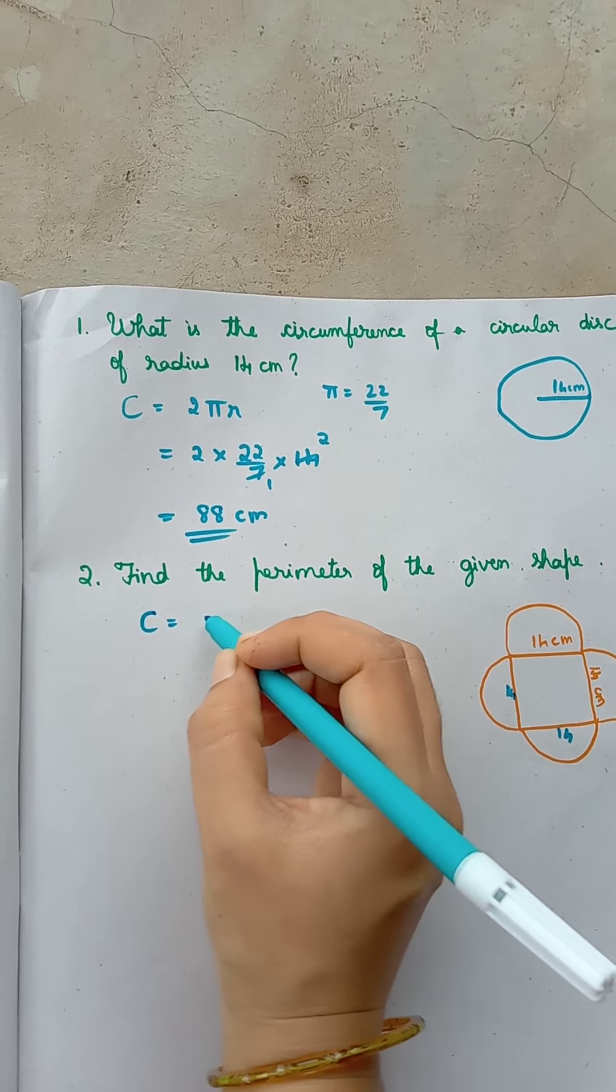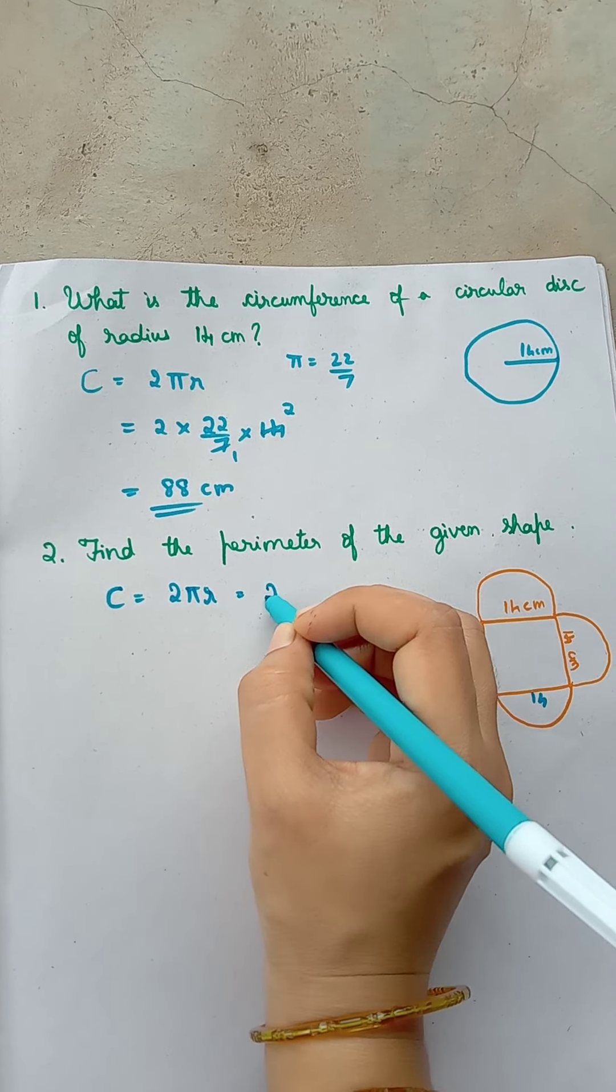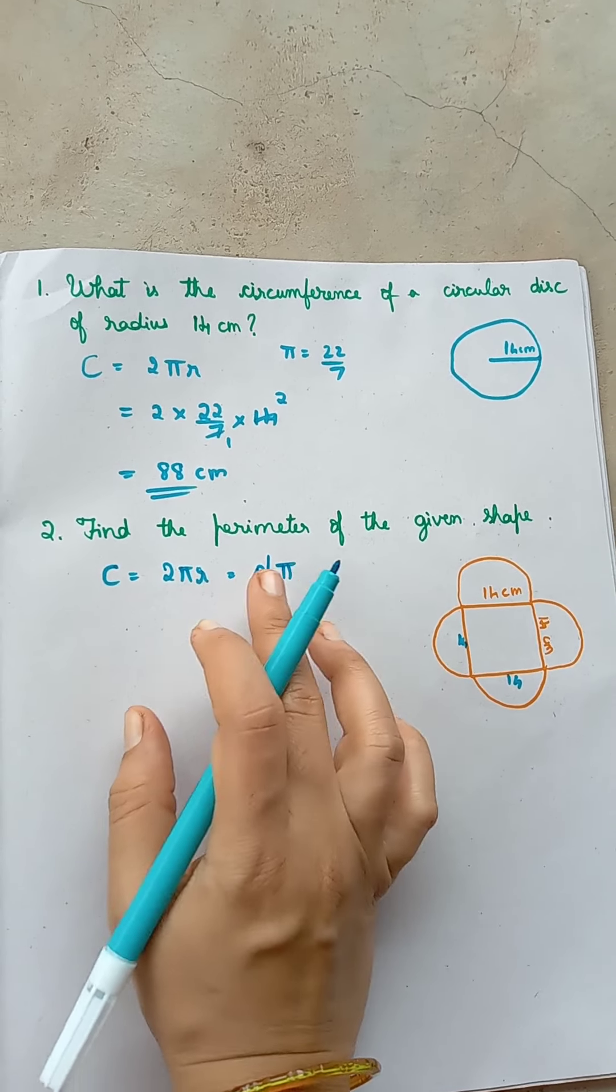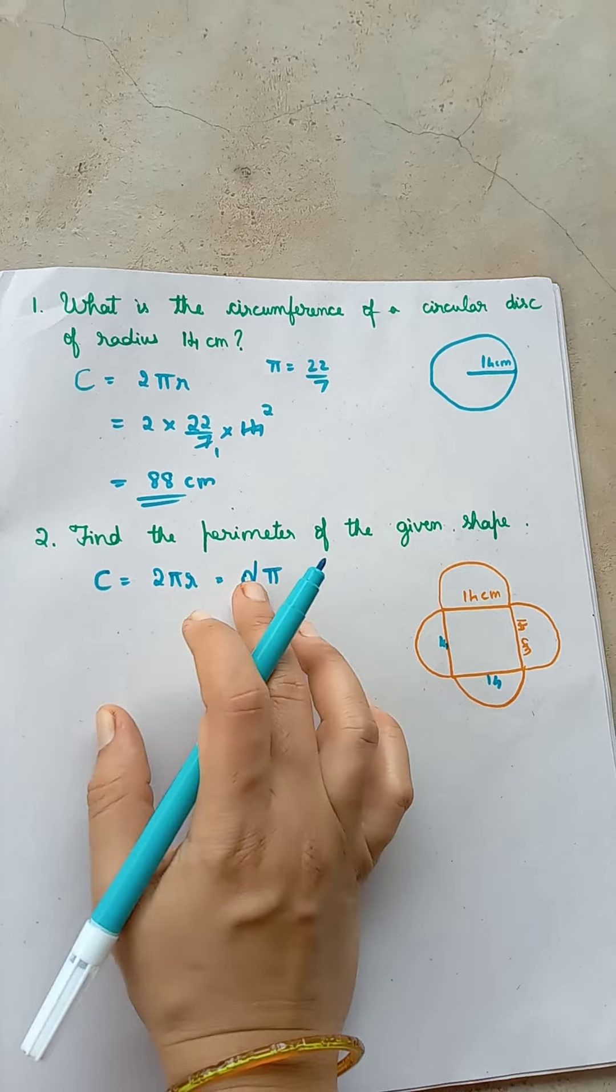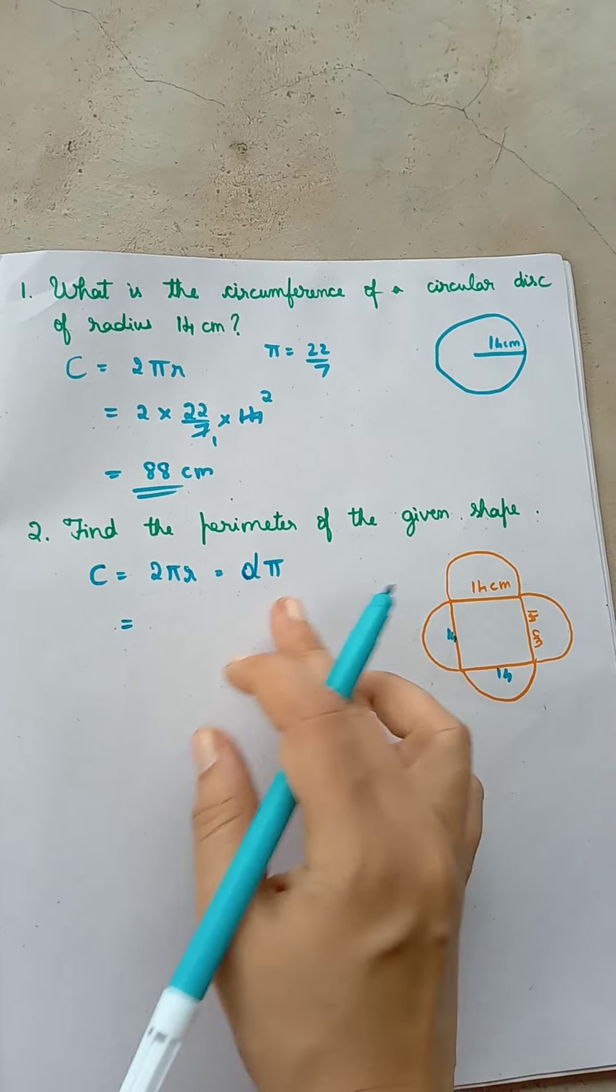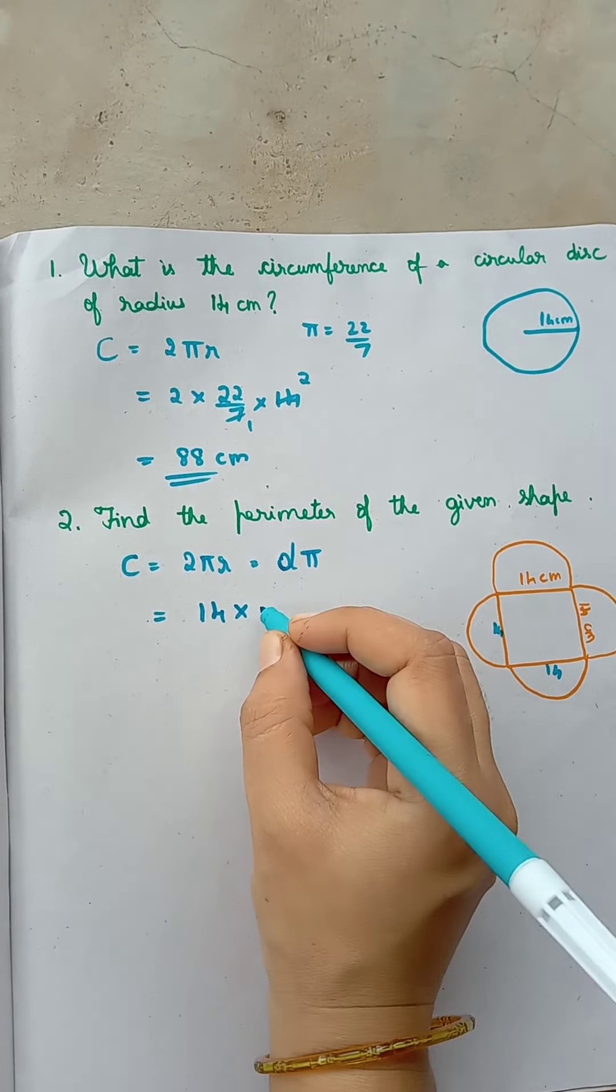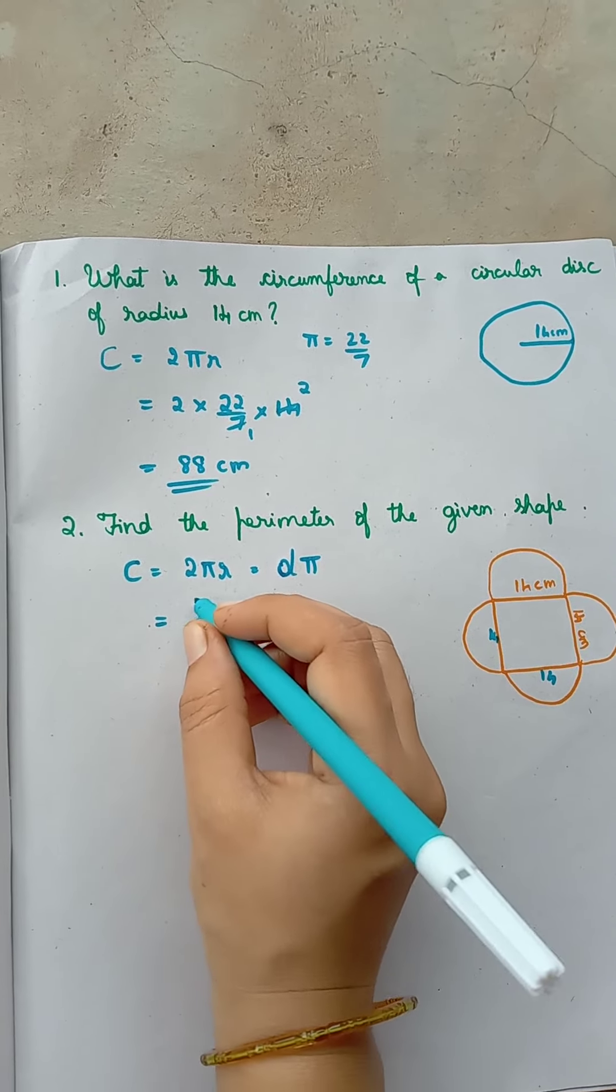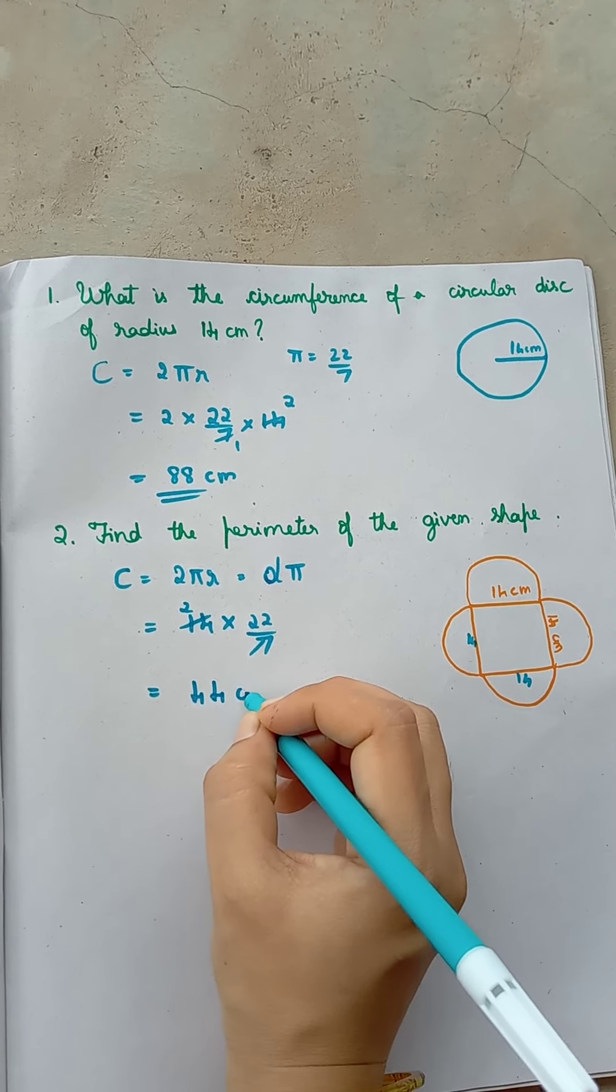So circumference is 2πr or d into π, because diameter is 2 times the radius. So you can write diameter is 14 cm into 22 by 7. So 7 1s are 7, 7 2s are 14. Circumference is 44 cm.